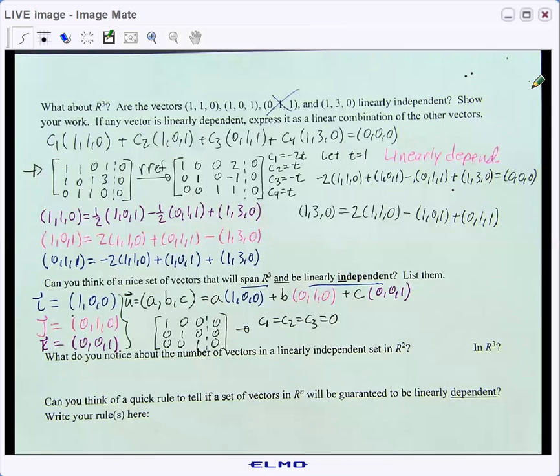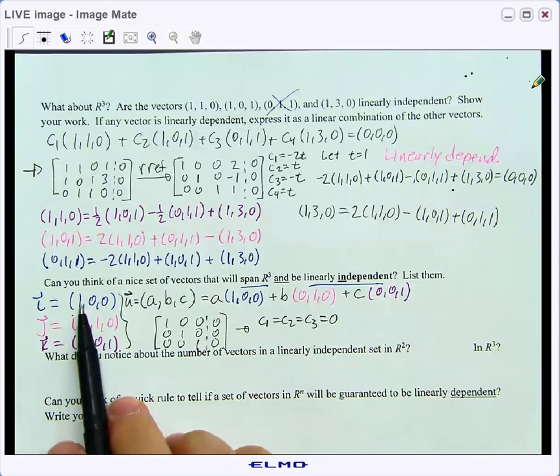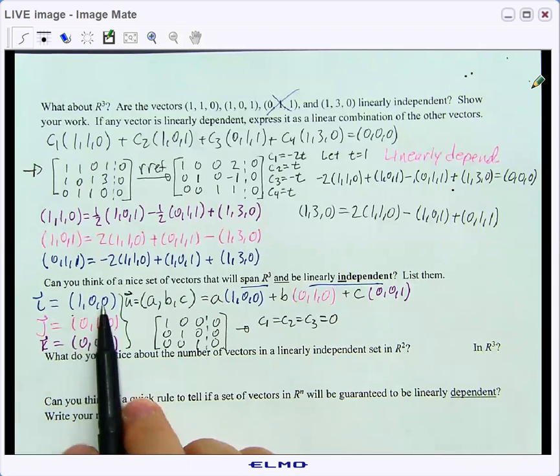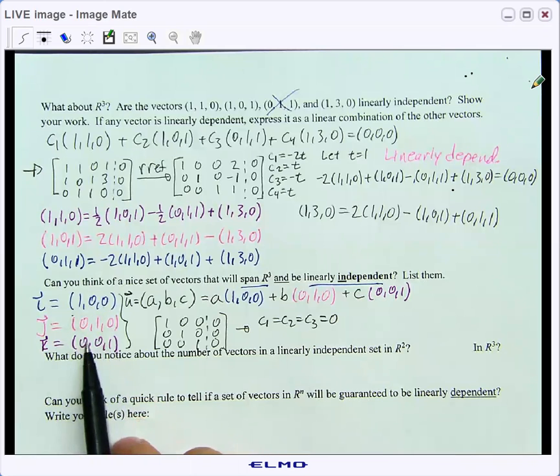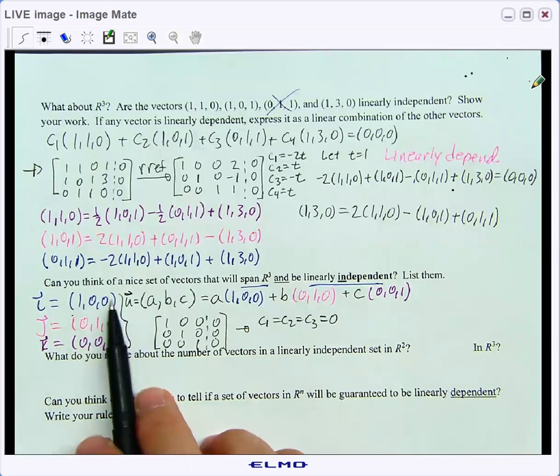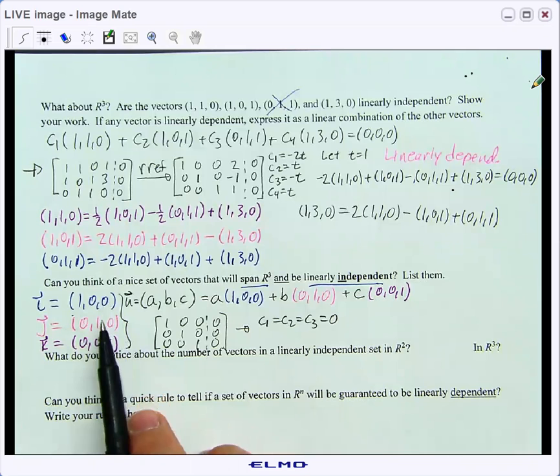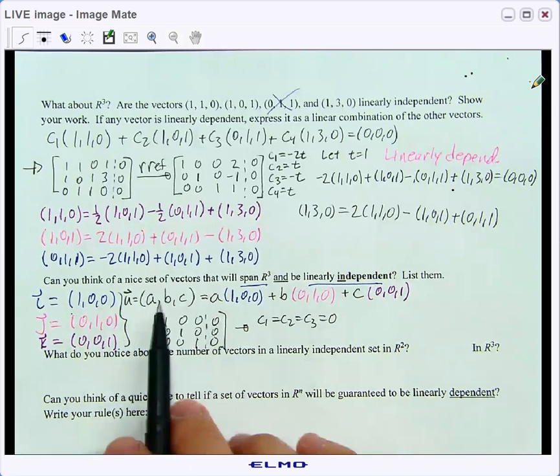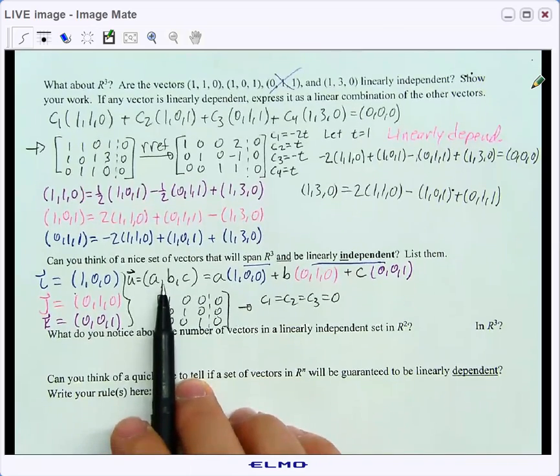What I did was I used our most friendly vectors, the i vector, j, and k. So (1,0,0), (0,1,0), and (0,0,1). If I wanted to make any vector (a,b,c) using these guys, I would take a of the i vector plus b of the j vector plus c of the k vector and I can make any vector (a,b,c) that I wanted to.